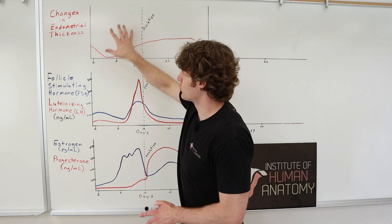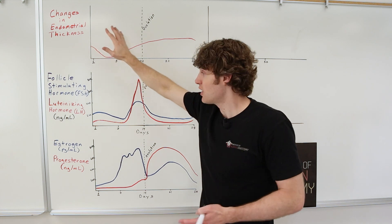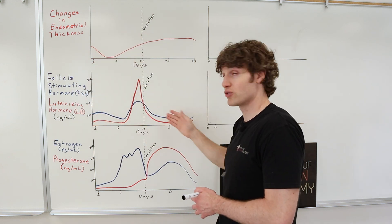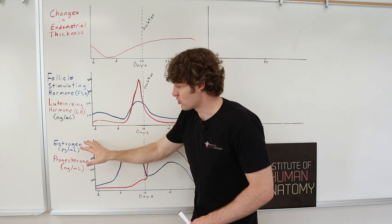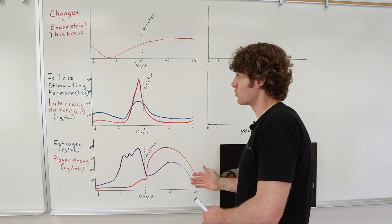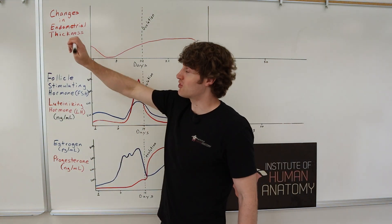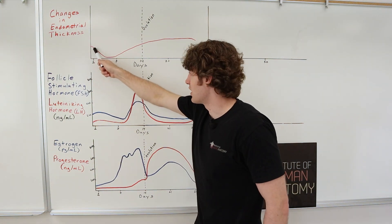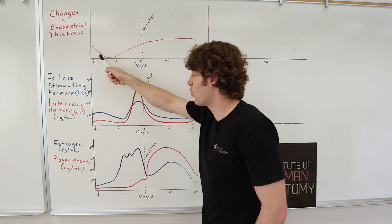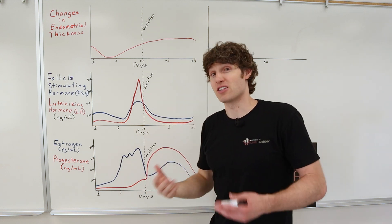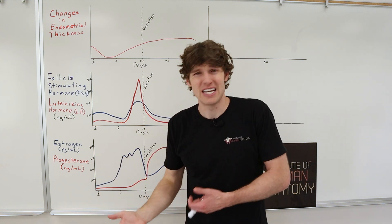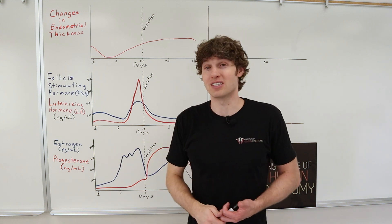The top chart is going over changes in endometrial thickness. The other one's going over follicle-stimulating hormone and luteinizing hormone and their varying levels throughout the 28 days. Same with estrogen and progesterone, their levels throughout the 28 days. So let's start with changes in endometrial thickness. You can see at the beginning on the first three to five days, you're going to have the decrease or the thinning out of the endometrium. That's associated with essentially menstruation, the bleeding, the period cramps, all the not so fun stuff that women get to deal with.